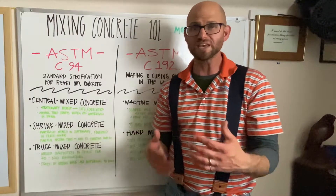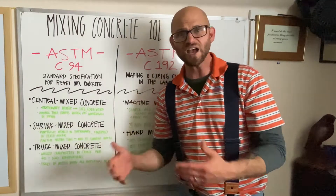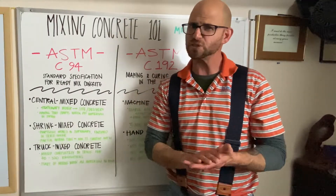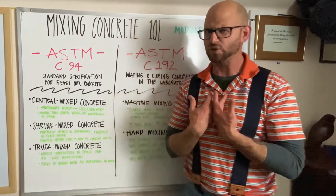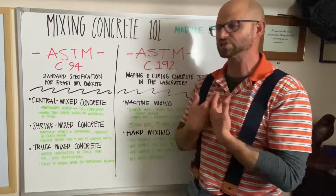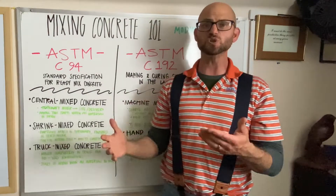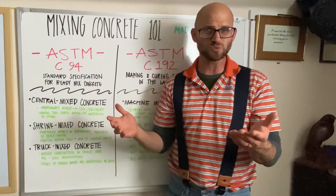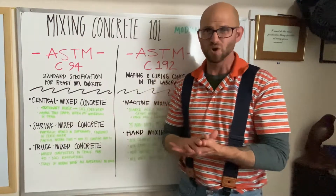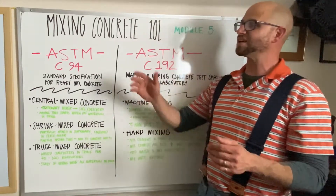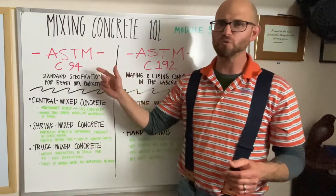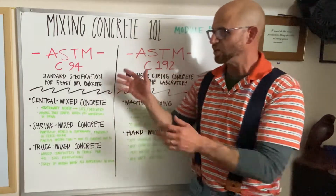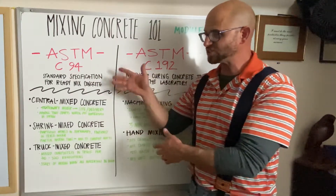Normally we're making somewhere between 5 and 10 cubic yards — I never feel comfortable going below 5 cubic yards. If we assume a cubic yard of concrete is just about 4,000 pounds, we're making somewhere around 20,000 to 40,000 pounds of concrete using this method.